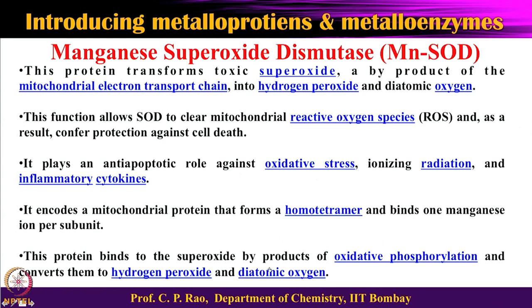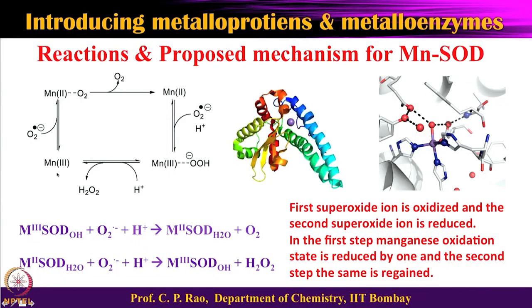The protein binds superoxide — a product of oxidative phosphorylation — and converts it into hydrogen peroxide and dioxygen O2. The manganese superoxide dismutase active site shows one subunit where manganese is surrounded by histidine residues and a hydroxo or oxo species connected through secondary interactions from the protein. This is the kind of active site arrangement present in one monomer of the tetrameric protein.